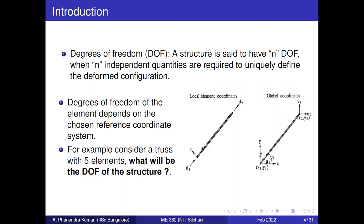Whenever someone asks about the degrees of freedom of a plane truss element — a single element — it will be two degrees of freedom: the displacement along x (u) and displacement along y (v) required to define the deformed configuration. For a five-element plane truss structure, we will have five times two, resulting in 10 degrees of freedom. The subscripts on u and v represent node numbers, so node 1 has displacements u1 and v1.